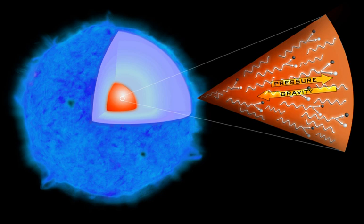Progenitors with a significant remaining hydrogen envelope will produce a type II supernova, those with no hydrogen but significant helium will produce a type Ib, and those with no hydrogen and virtually no helium will produce a type Ic.